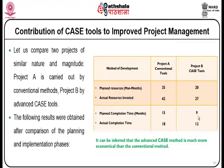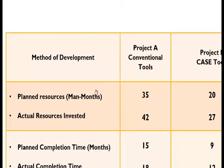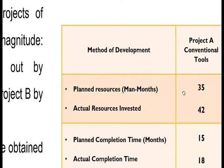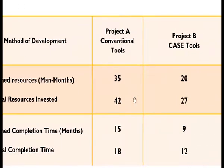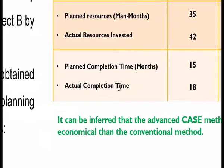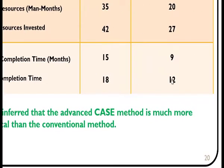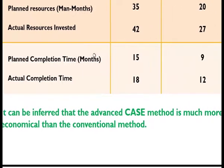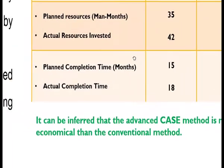Contribution of case tools to improve software project management. Comparing two projects of similar nature and magnitude: Project A using conventional methods, Project B using advanced case tools. Planned resources in man-months: Project A — 35, Project B — 20. Actual resources invested: Project A — 42, Project B — 27. Planned completion time in months: Project A — 15, Project B — 12. It can be inferred that using case tools is much more economical than conventional methods.